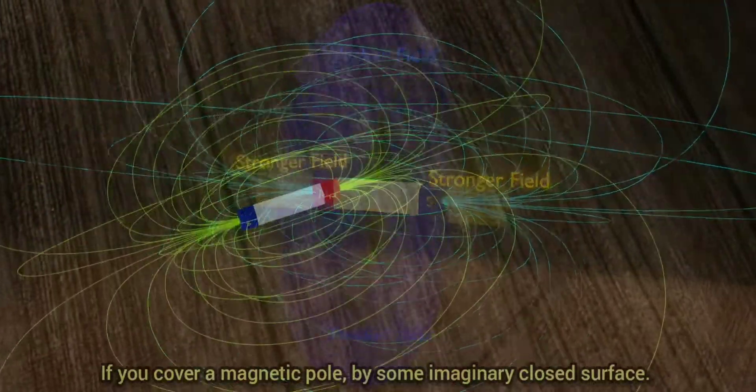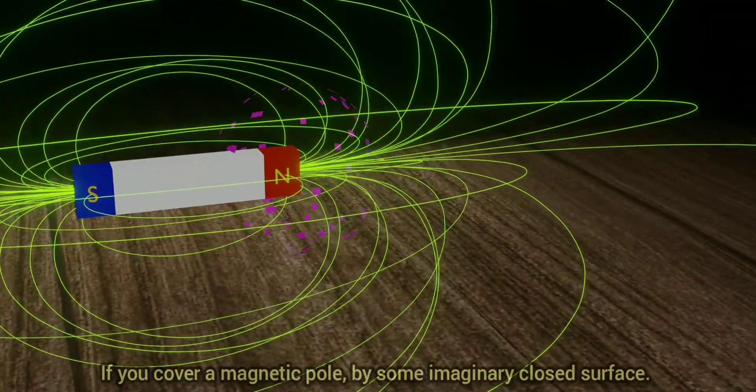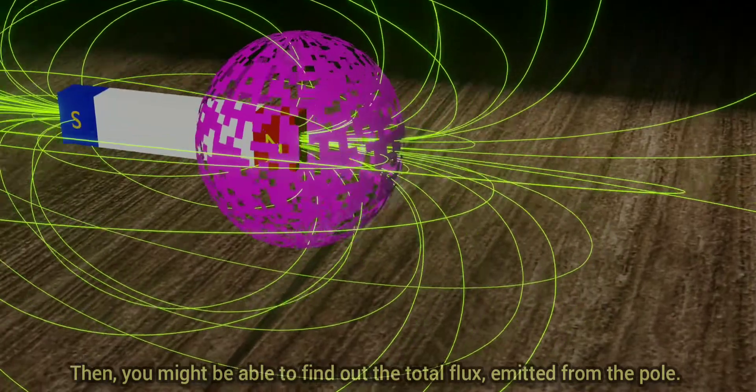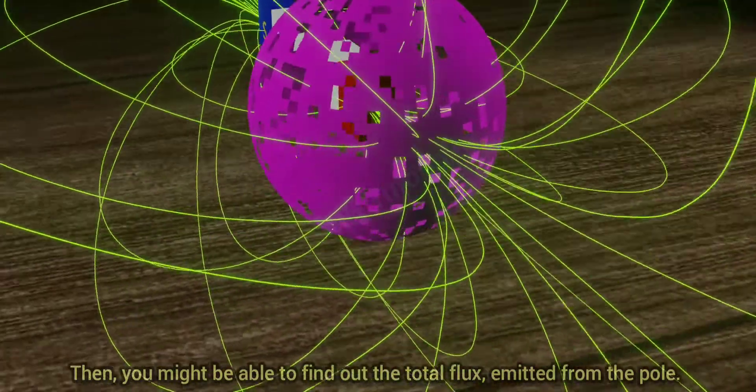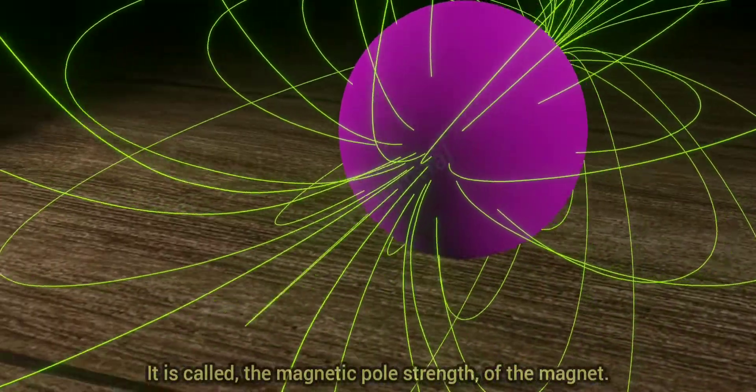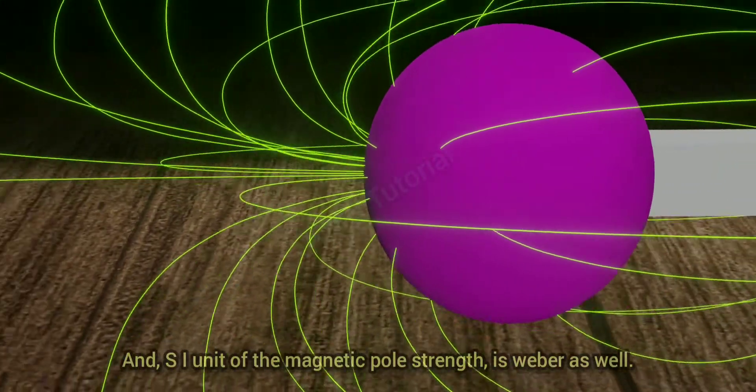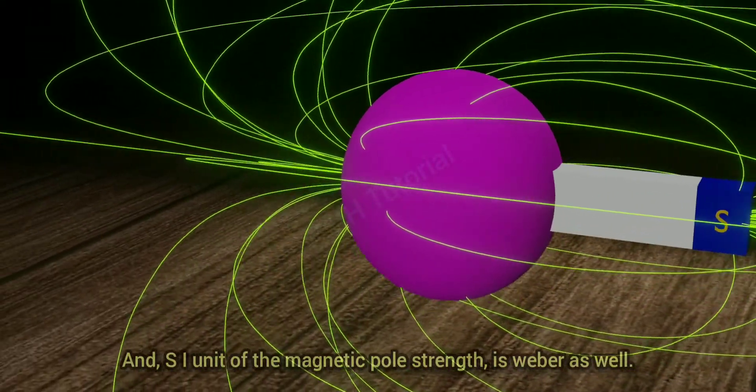If you cover a magnetic pole by some imaginary closed surface, then you might be able to find out the total flux emitted from the pole. It is called the magnetic pole strength of the magnet. And SI unit of the magnetic pole strength is Weber as well.